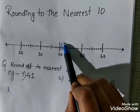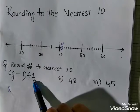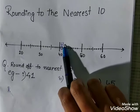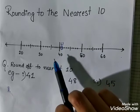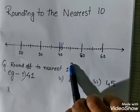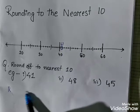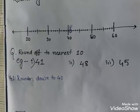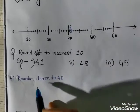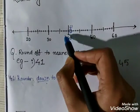The first step is to see which two tens 41 lies between. It lies between 40 and 50. Now we check whether 41 is closer to 40 or 50. Looking at the number line, it is very clear that 41 is near to 40. So the answer is 40, and we write: 41 rounds down to 40.